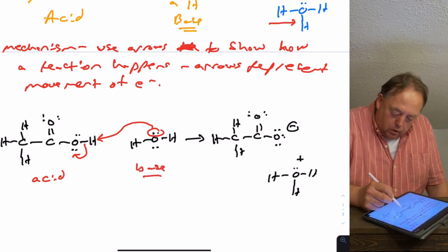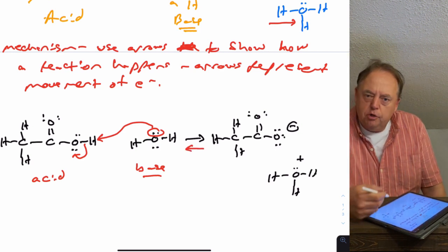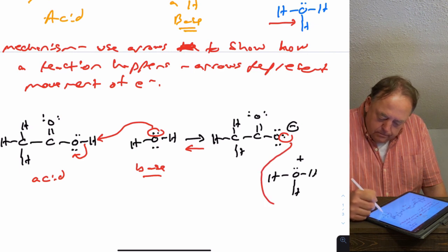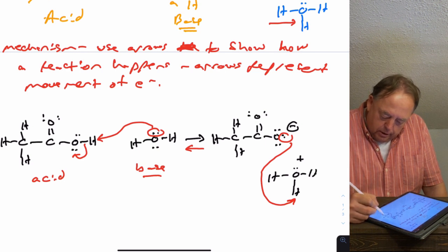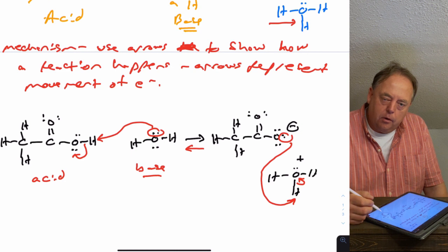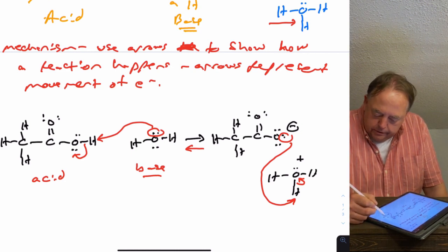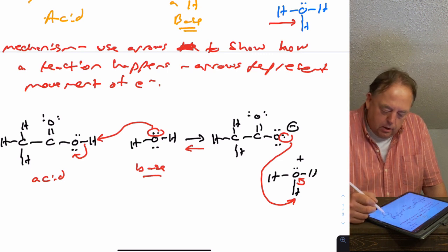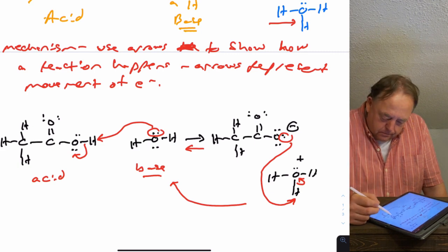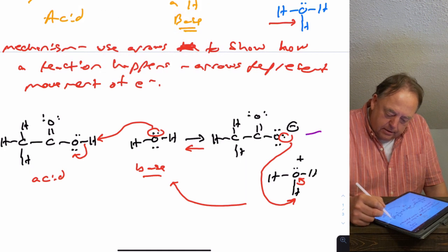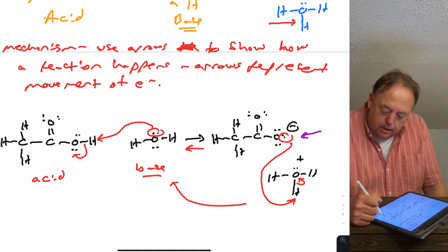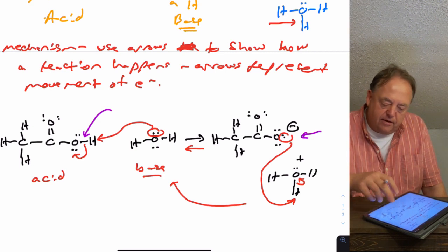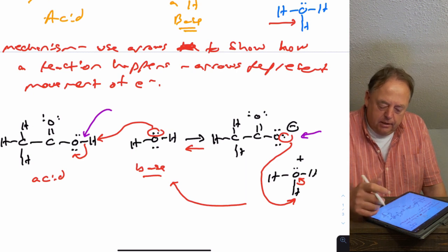In theory, all reactions are reversible, so the two products could react with each other to reform the reactants. If that happens, this oxygen would take a hydrogen — it doesn't matter which one — and the two electrons in the O-H bond become a lone pair on oxygen. The arrow starts on the bond and ends on the atom, meaning you're taking those two electrons in the bond and placing them onto the oxygen as a lone pair.